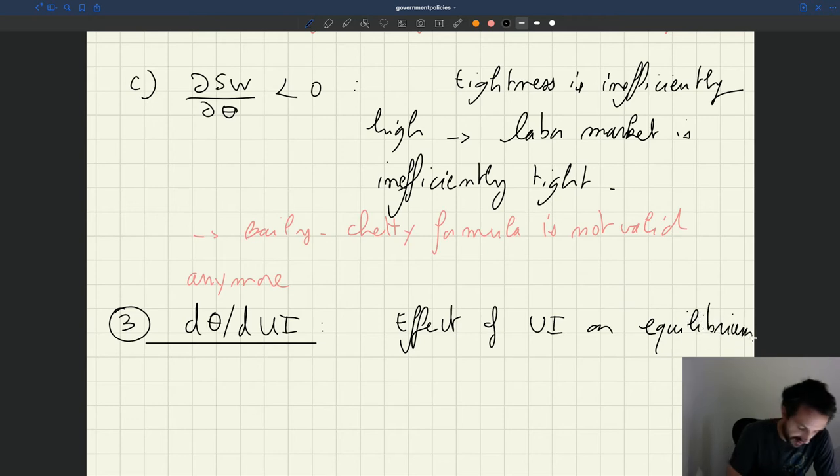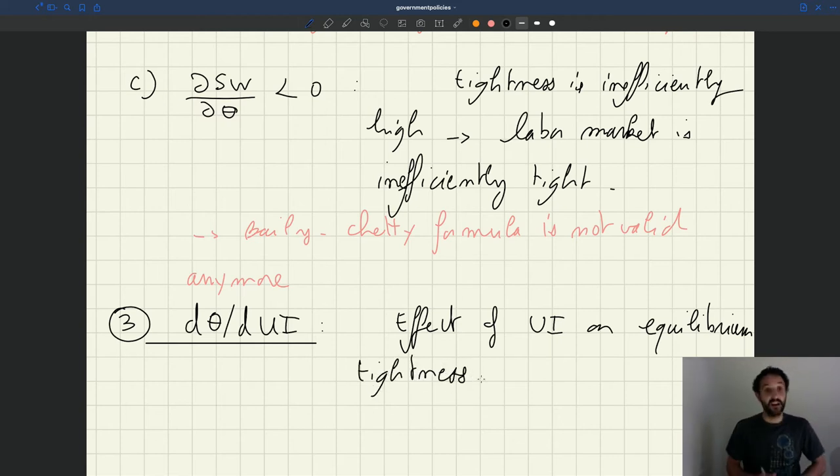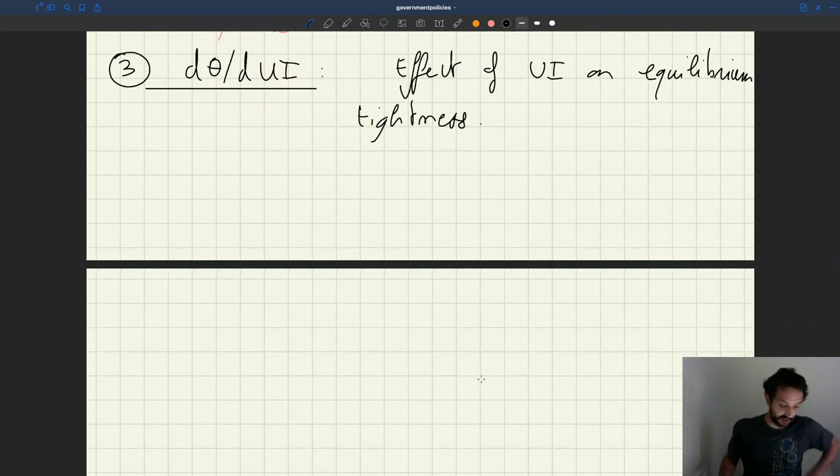So at the macro level, if we change UI, what's going to happen to the equilibrium tightness? And that effect of UI on a macroeconomic variable also matters for the optimal level of UI. It's going to enter the formula. And again here, there are three situations that we've explored.